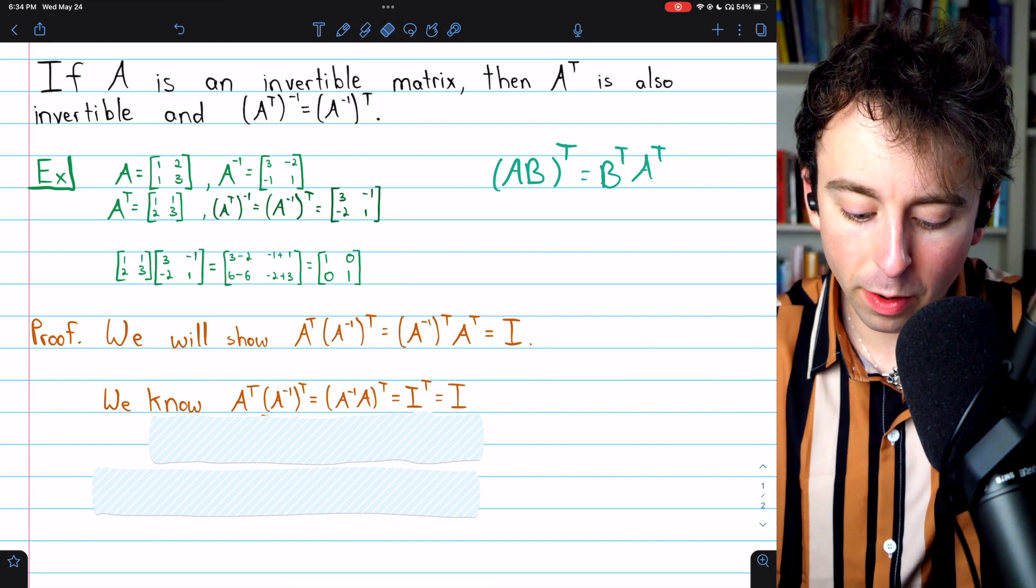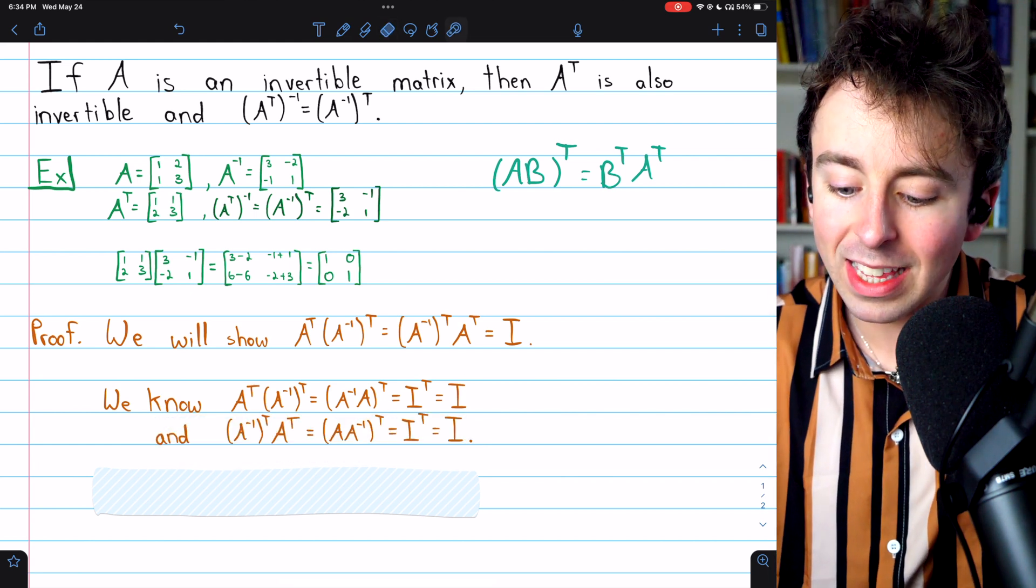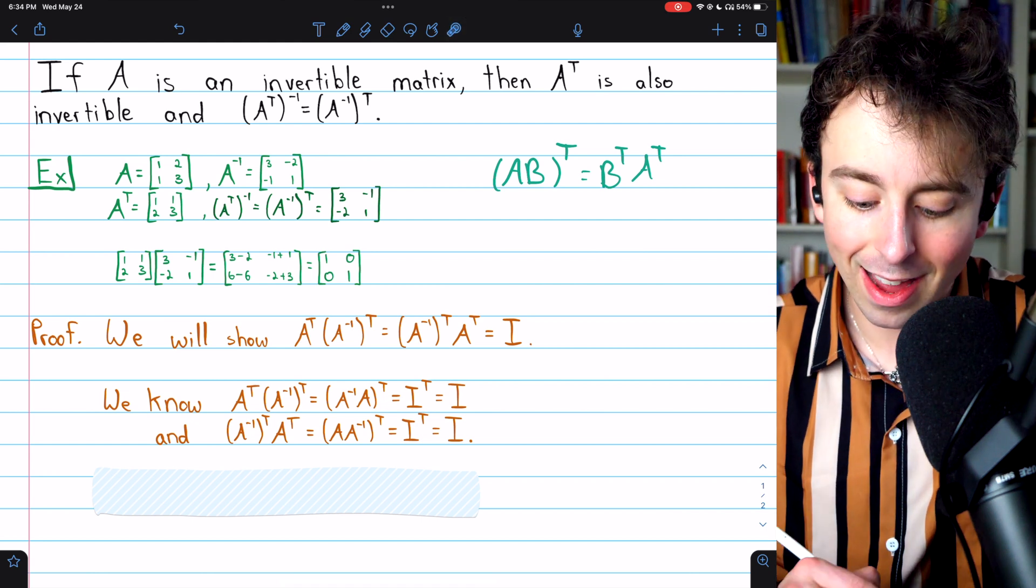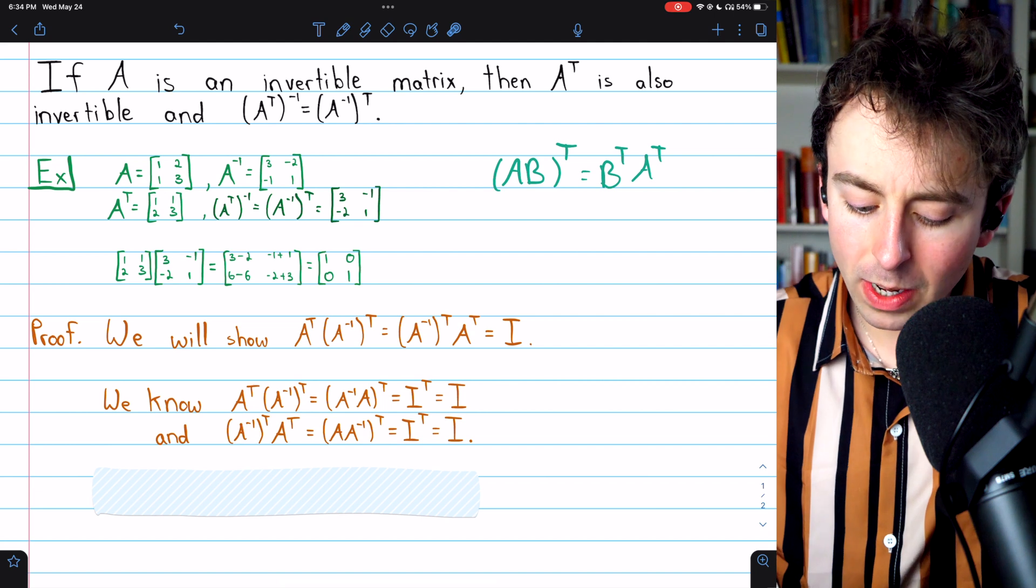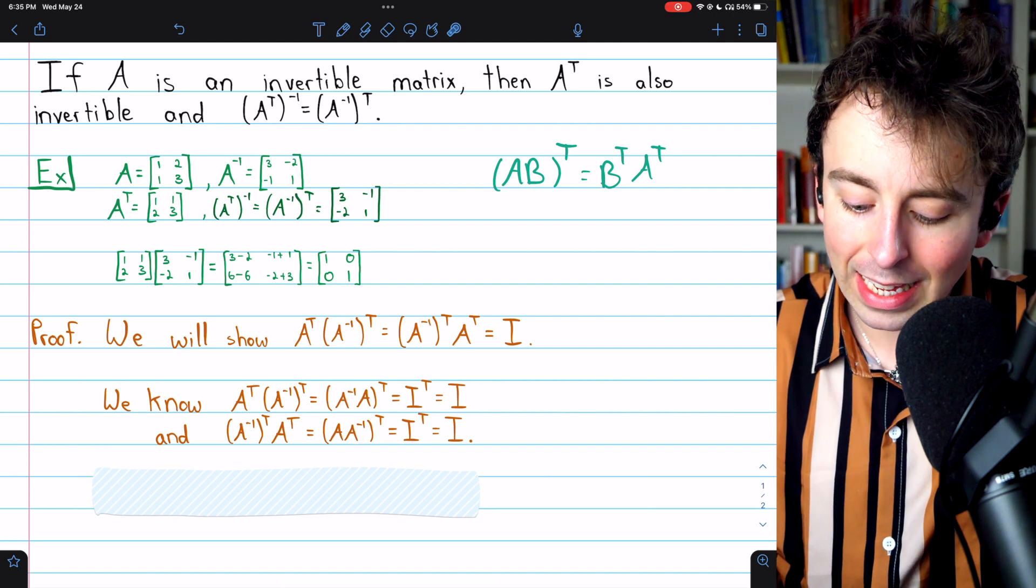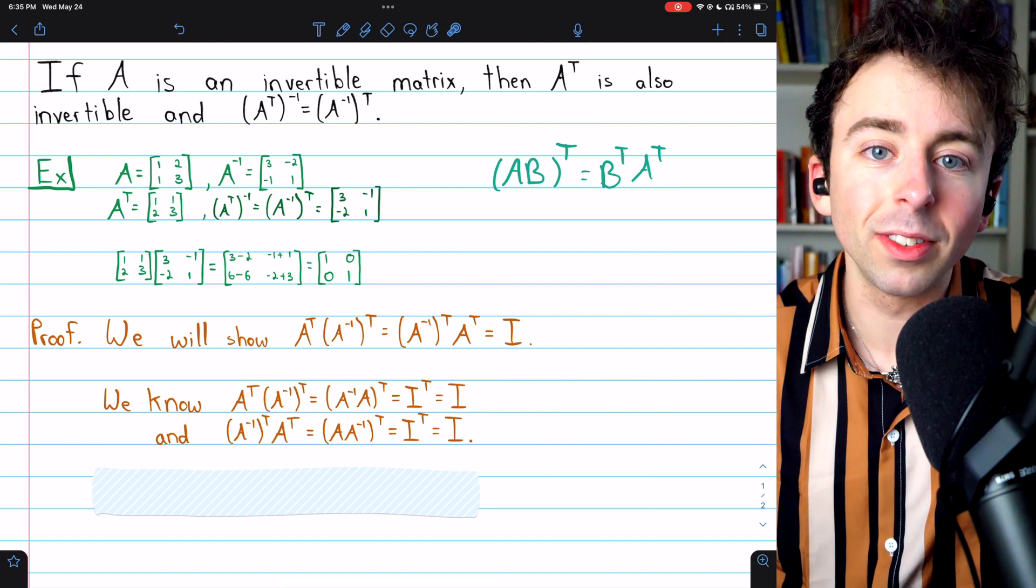Now it's very straightforward to show that if you multiply them in the other order, you also get the identity. If we put A inverse transpose on the left, then we could apply the same property and again find that this product equals the identity.